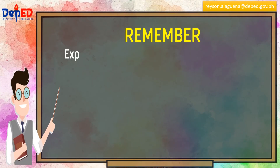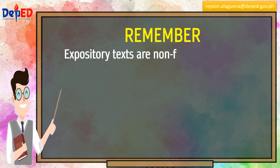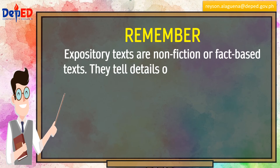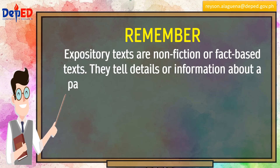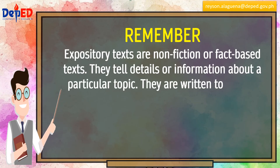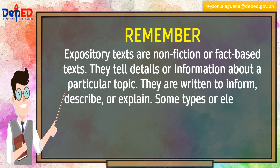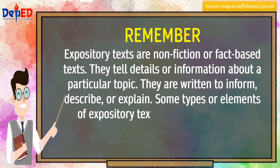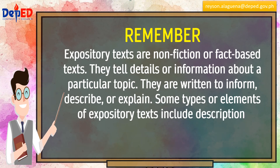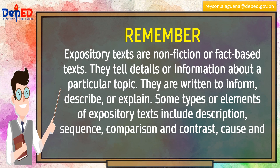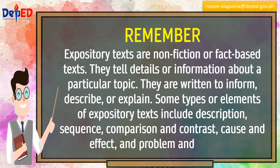Remember: expository texts are non-fiction or fact-based texts. They tell details or information about a particular topic. They are written to inform, describe, or explain. Some types of elements of expository texts include description, sequence, comparison and contrast, cause and effect, and problem and solution.